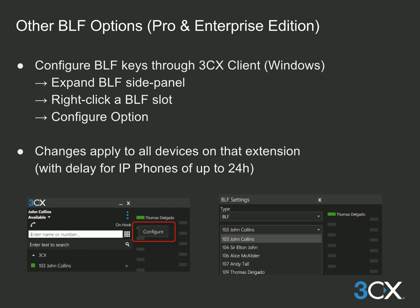If 3CX is using a Pro or Enterprise edition license, users can configure their own BLF keys without the intervention of the PBX administrator. This is achieved through the 3CX client for Windows — expand the BLF side panel by clicking the three blue dots in the top right, right-click a BLF key and click Configure. This configuration applies to all provisioned devices on that extension, including hot desk extensions. 3CX clients update immediately, while IP phones reprovision within up to 24-28 hours.